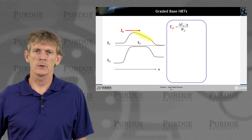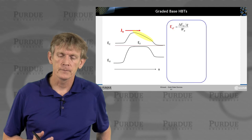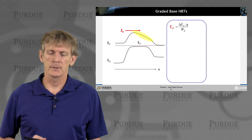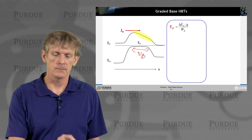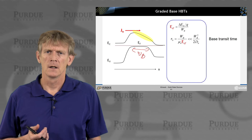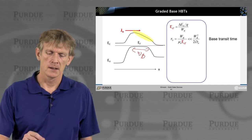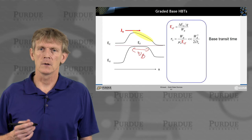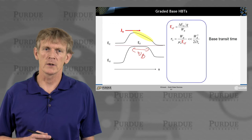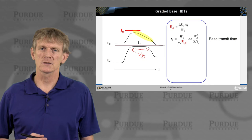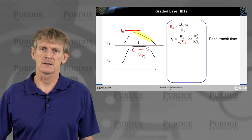We have built in an effective field, and that is the difference in the band gap over a certain distance W base. And of course we normalize it by charge Q. Now that will reduce the base transit time dramatically. So now we have a base transit time that is based on the length of the base. We have still some mobility term and we have the accelerating electric field. So we have a drift term built into the structure now. And that will be much smaller than the diffusion limited base transit time.